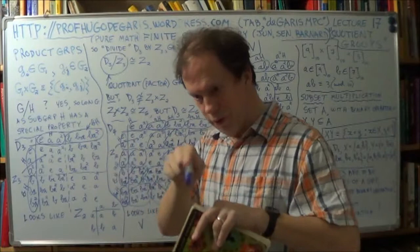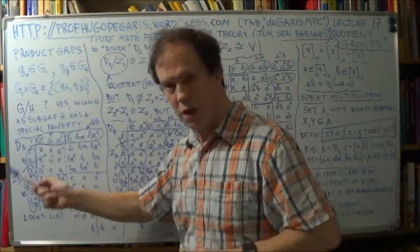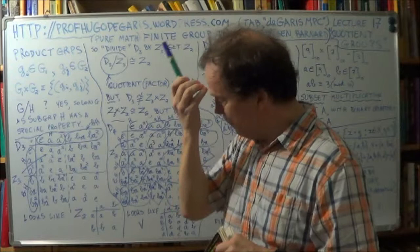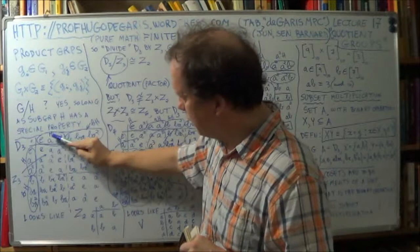Square brackets zero mod three, square brackets one mod three, square brackets two mod three. We've done that several times already, okay? So this group here is a subgroup.